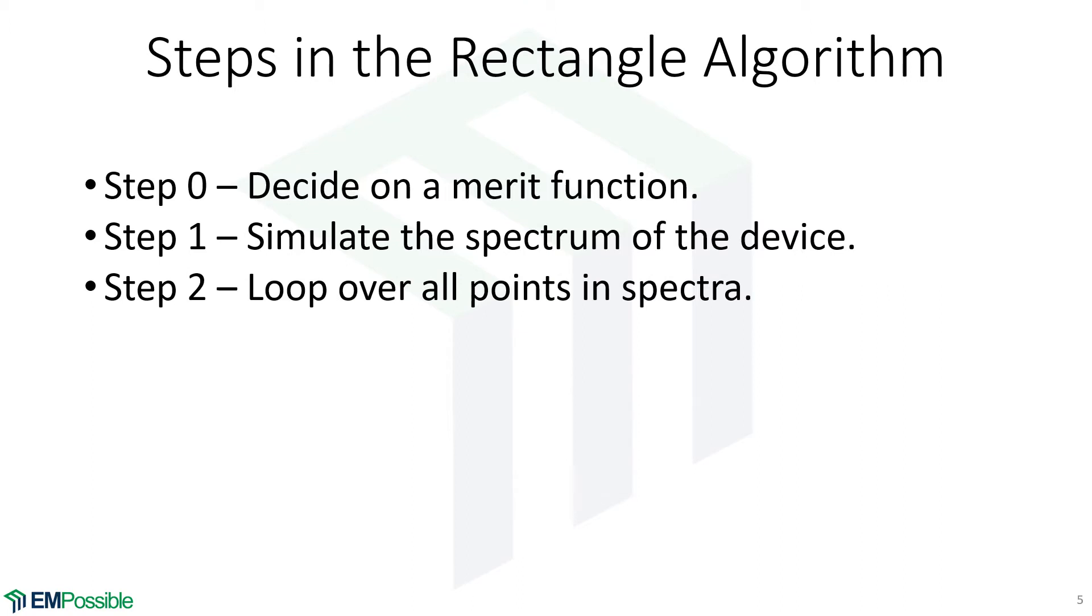Then what we'll do is we will loop over that line, and we will go point by point, left to right. For every point on that spectrum, the first thing we'll do is we will seek left until we've hit the line again. That sets where the left edge of the triangle is. Our starting point sets the height of the rectangle.